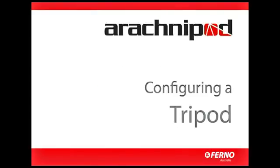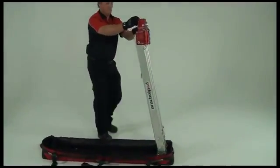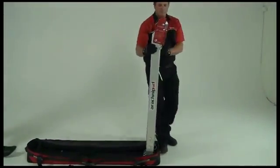In this demonstration we're using the Advantage model tripod, however the principle remains the same whichever tripod model you're using. The most efficient way to lift the tripod from its bag is to use the D-ring at the head of the middle leg.